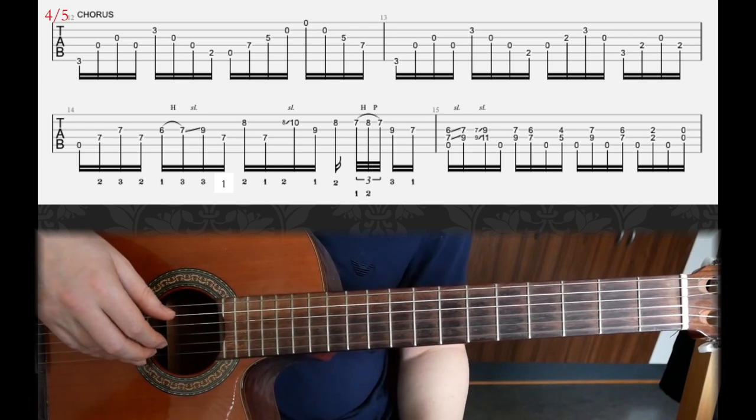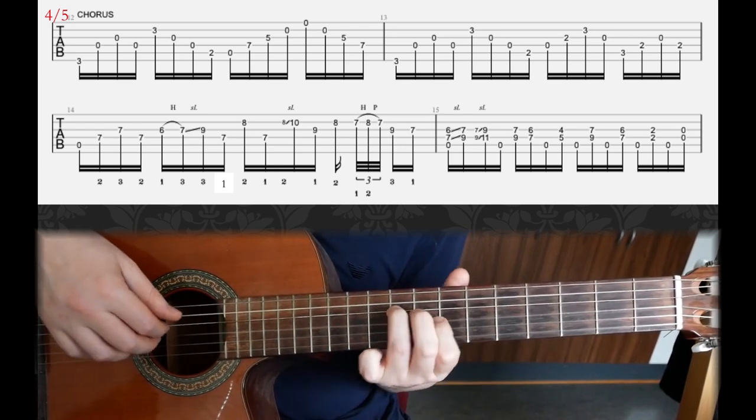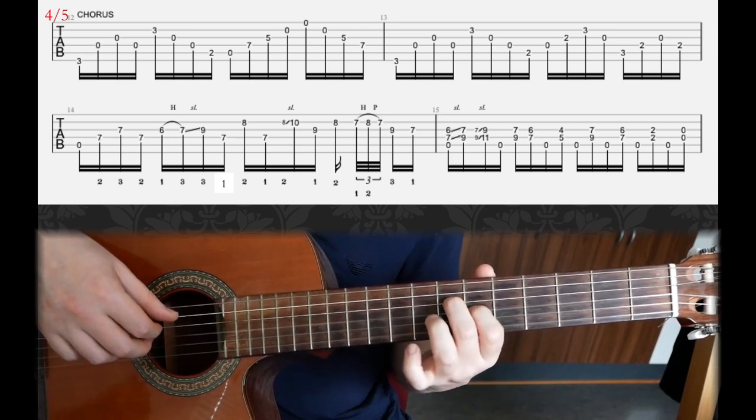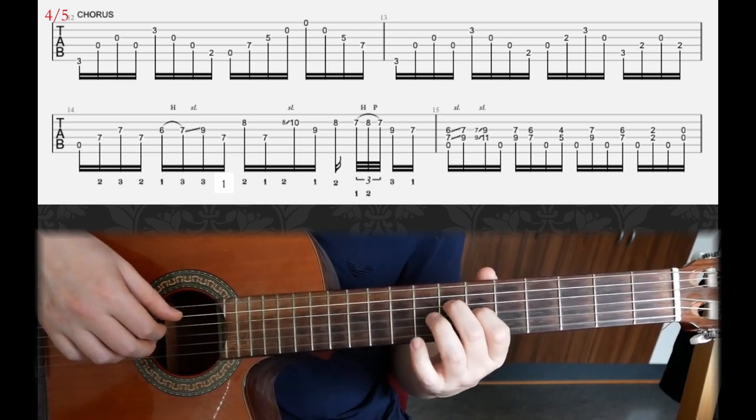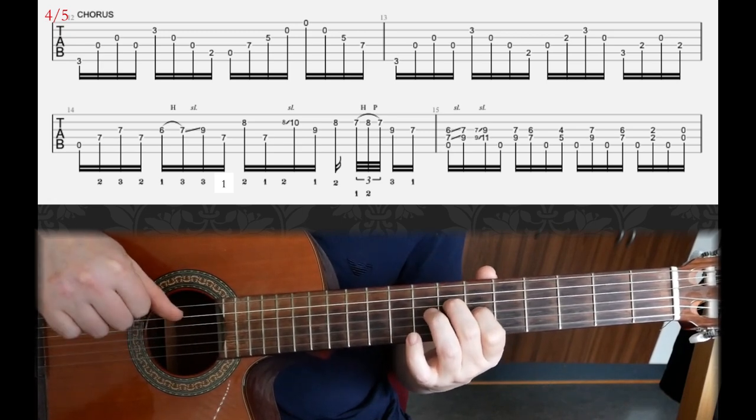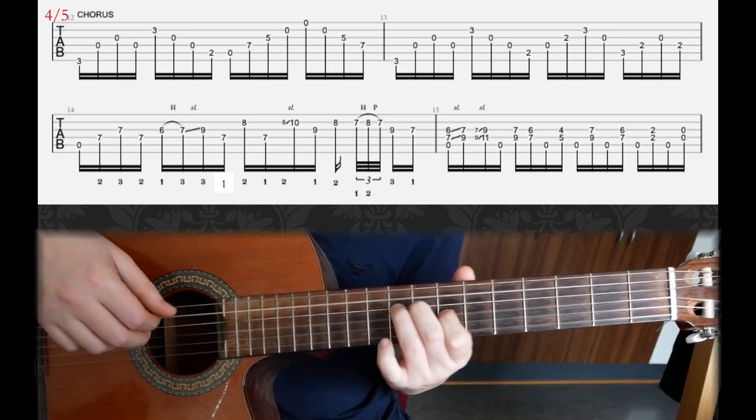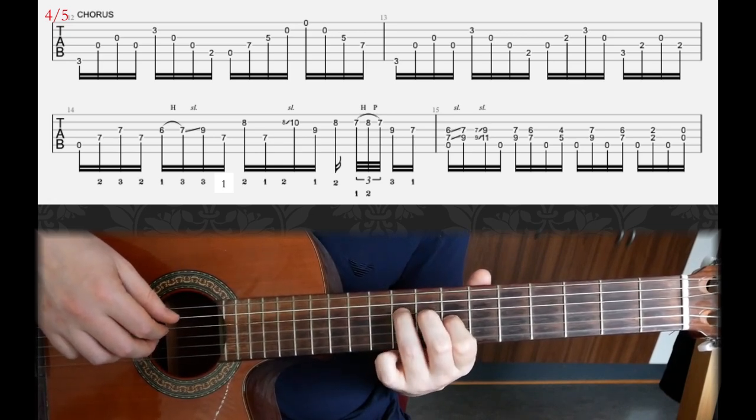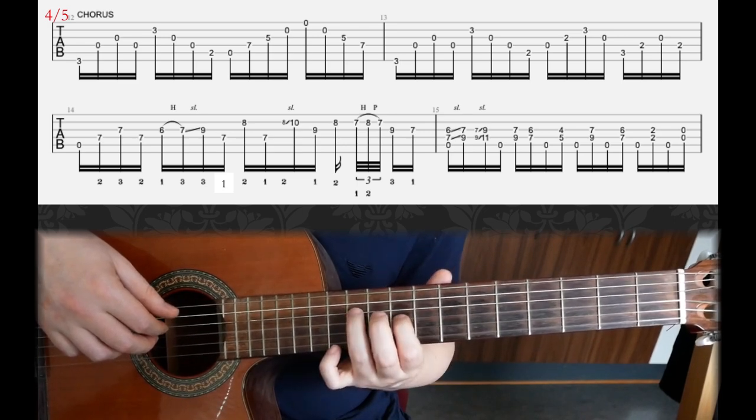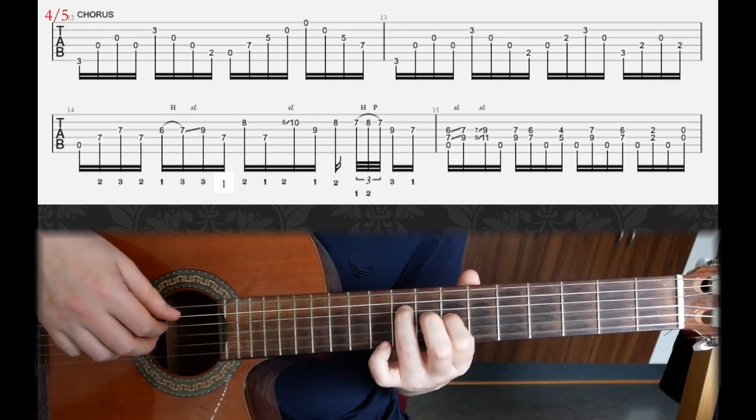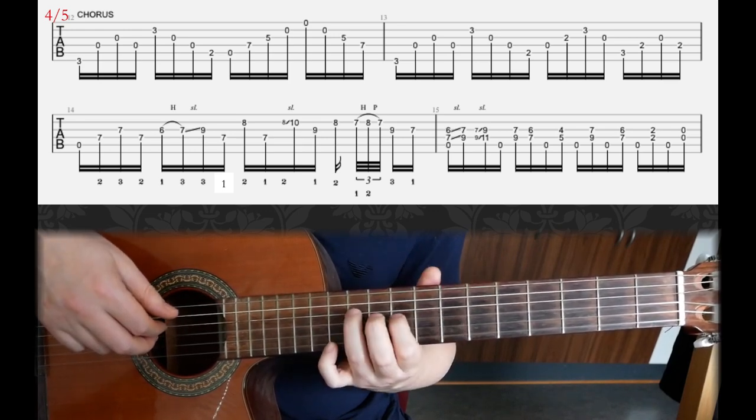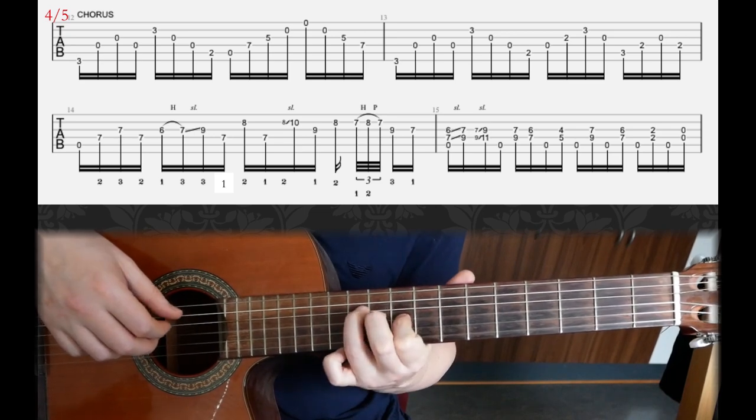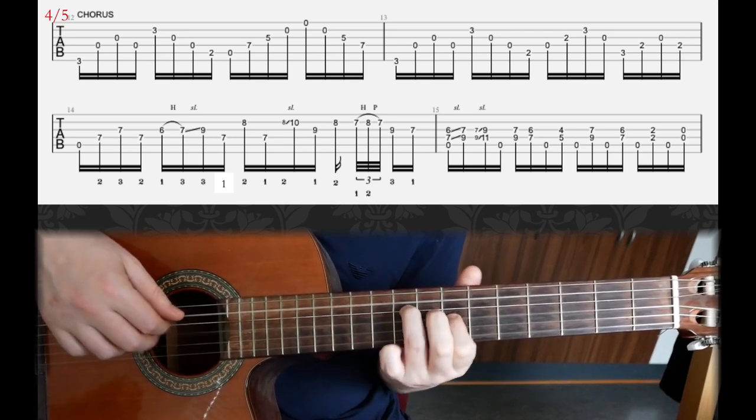There you have the first bar in the second line. And then the final bar - what we have here is the quick slide. So 7 on D and 6 on G slide up to 9 and 7, okay? And also strike the A string at the same time. That's the first move. And then he's going to move up the shape 2 frets higher up.